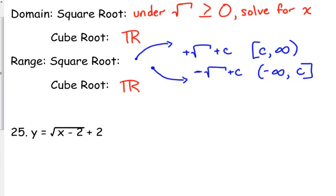So you need to look at, is the square root positive or negative? If it's positive, then it's increasing, so it's from that constant number up. If it's a negative in front of the square root, then it's decreasing, so you've got from negative infinity up to that constant number.